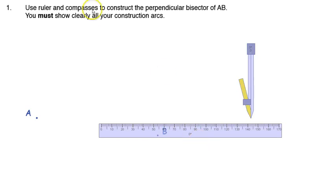Right, hopefully you'll remember how to do this. You've got to use a ruler and compasses to construct the perpendicular bisector of AB.